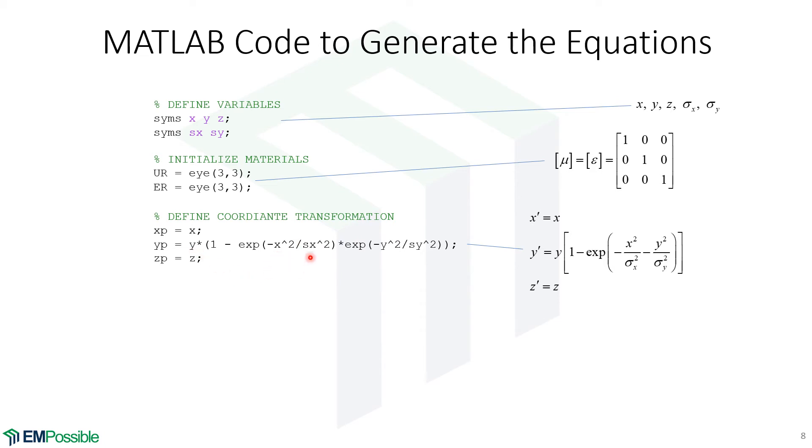Remember Y, X, S X, S Y, Z. These are all symbolic variables. And so now X P, Y P, and Z P are now symbolic variables.